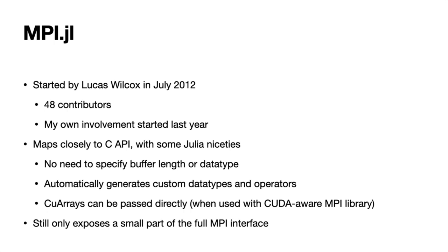MPI.jl, which provides the Julia bindings to MPI, is also a relatively old package by Julia standards. It was started by Lucas Wilcox in July of 2012, only a few months after Julia was announced, and since then it's had 48 contributors. My own involvement started last year. It maps fairly closely to the C API with some additional Julia niceties — you don't need to specify things like buffer length or data types. It will automatically generate custom data types and operators for you, and if you're using a CUDA-aware MPI library, you can pass CUDA arrays directly to any of the functions. It still only exposes a fairly small part of the full MPI interface, and part of the reason it's had so many contributors is that users add functionality as they need it.